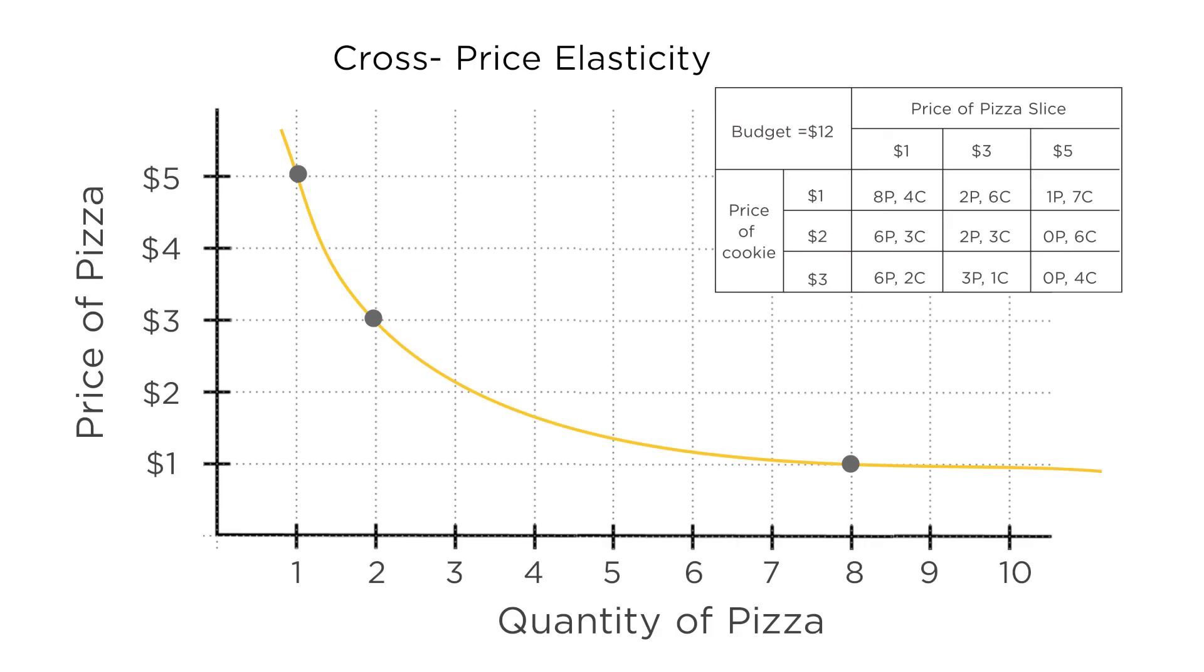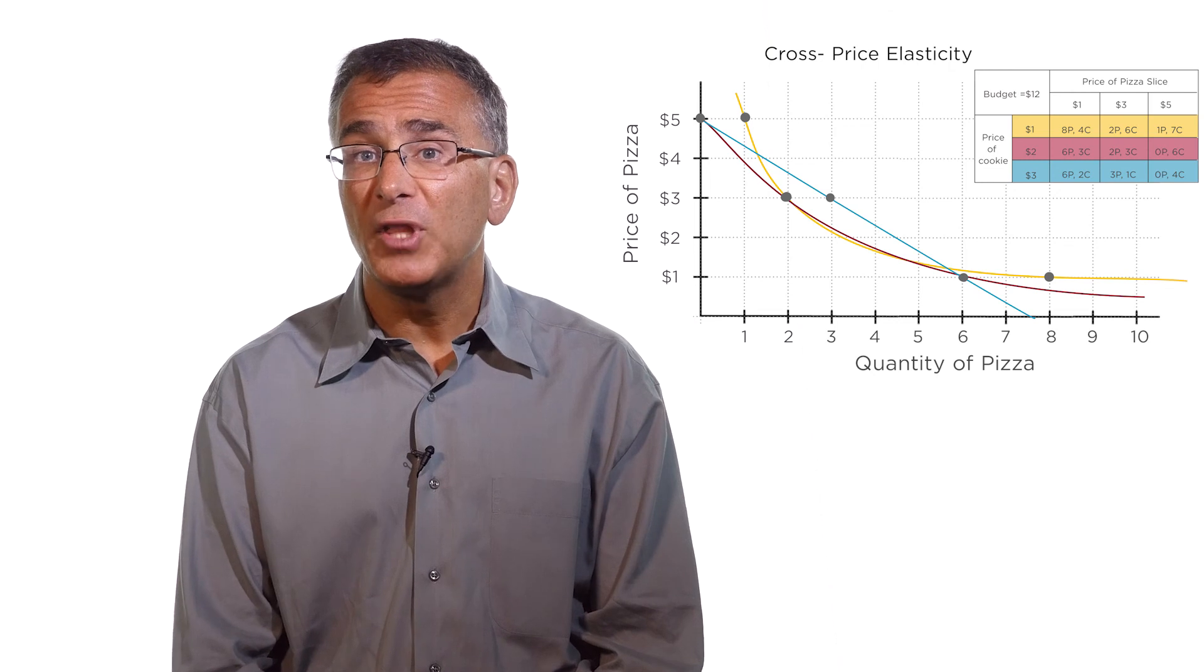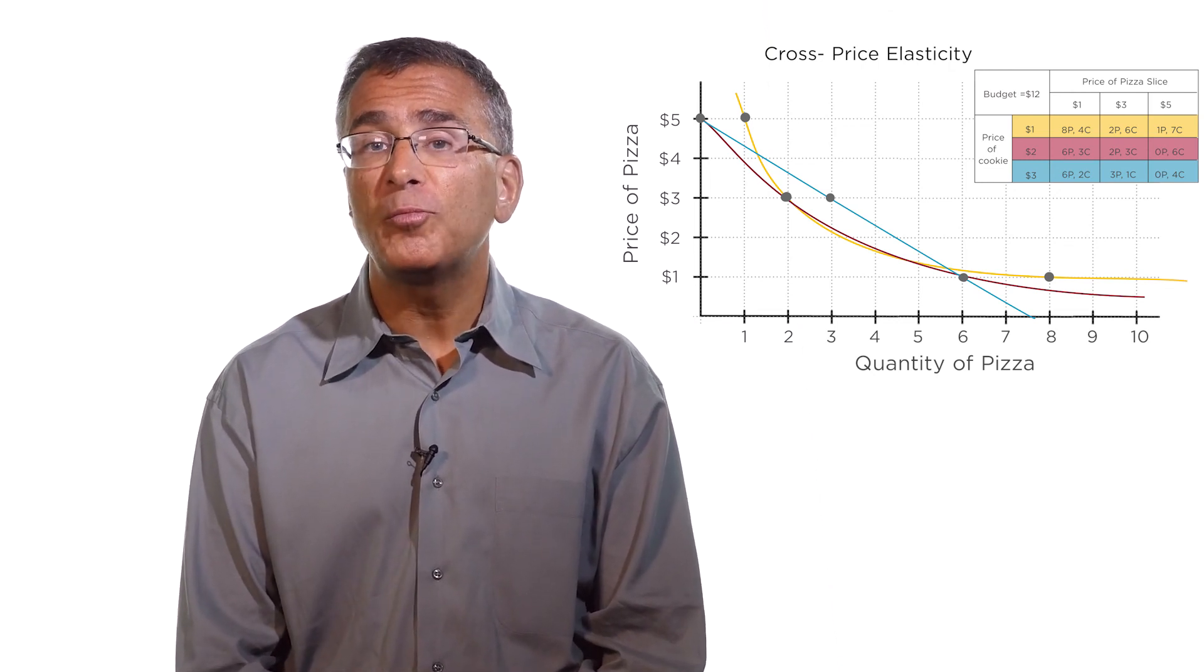The third concept to keep in mind with demand curves is another type of elasticity: cross-price elasticity. Recall that the pizza demand curve we've been working with was for a price of cookies that was fixed at $1. Imagine instead the cookies cost $2 each, then we'd get a different demand curve for pizza. And if cookies cost $3 each, we'd get yet another demand curve for pizza. So the demand curve for any good will depend on the prices of other goods since your underlying utility maximization is all about finding the best mix. And since the demand curve can change as the price of the other good changes, we say that there is a cross-price elasticity.